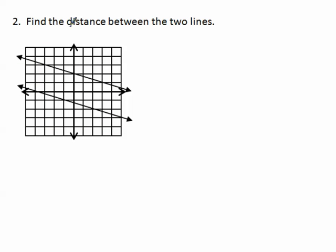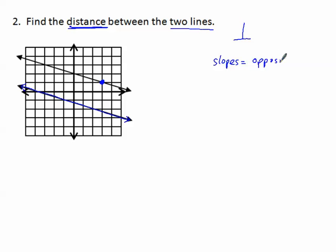Number two: find the distance between the two lines. The distance between two lines has to be from a point straight to the other line, perpendicular to it. Let's start by finding a point on one of the lines. Notice these lines look parallel — if we're finding the distance between two lines, they should be parallel, because then it's always the same distance between them. Let's find the distance from a point on one line to the other line, using the same slope approach as in number one.